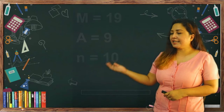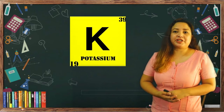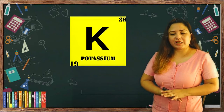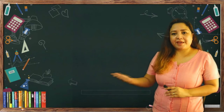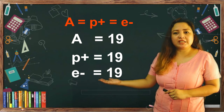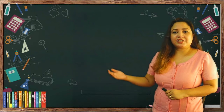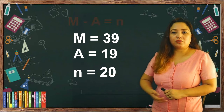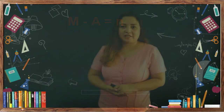Another example — let us have potassium. Potassium has atomic number 19 and mass number 39. Following APEN mnemonics, the atomic number is 19, which means the proton number is also 19 and the electron number should also be 19. For the neutron number, mass number 39 minus atomic number 19 gives you 20. So potassium has 19 protons, 19 electrons, and 20 neutrons.